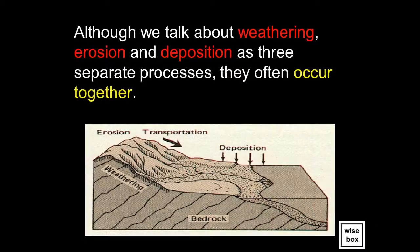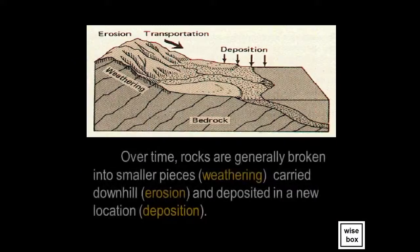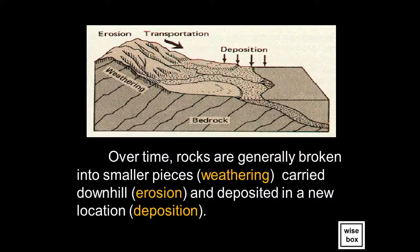Although we talk about weathering, erosion, and deposition as three separate processes, they often occur together. Over time, rocks are generally broken into smaller pieces through weathering, carried downhill through erosion, and deposited in a new location through deposition.